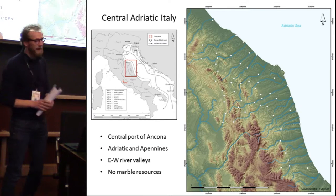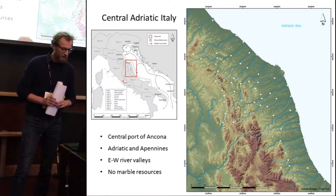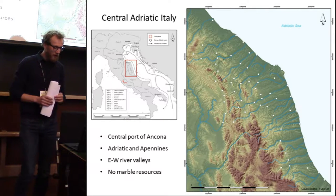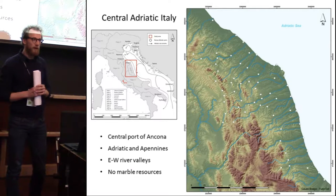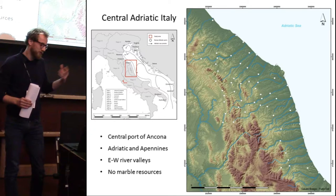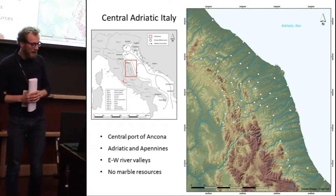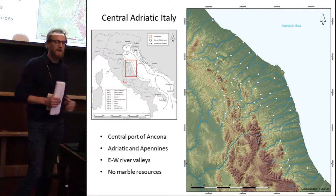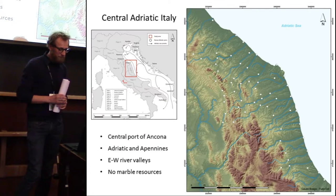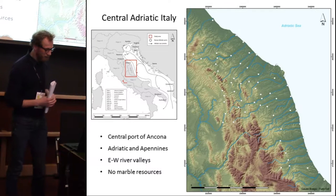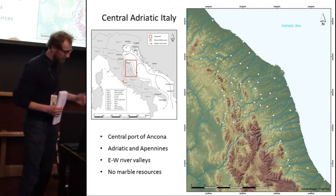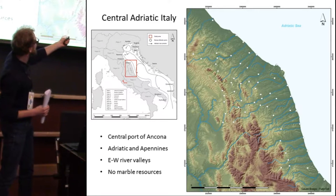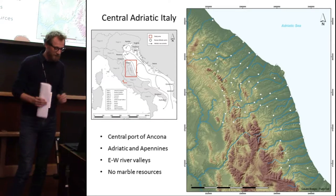A short introduction to the study area: we're in central Adriatic Italy. The study area comprises about 1,500 square kilometers, has 60 Roman urban centers, and is roughly located between the Apennines in the west and the Adriatic Sea in the east. It is centered around the Roman port city of Ancona, which was one of the major ports on the Adriatic Sea.